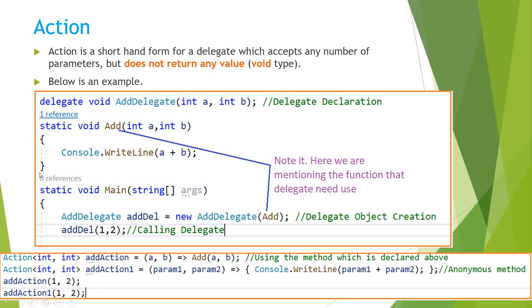The delegate accepts A and B as parameters. Here we have created a static method, and inside our main class we have created the delegate object, passing the method as a parameter and calling it. The disadvantage is it's not developer-friendly — first you have to declare it, then create the object, and then call it. This is not that handy for the developer.